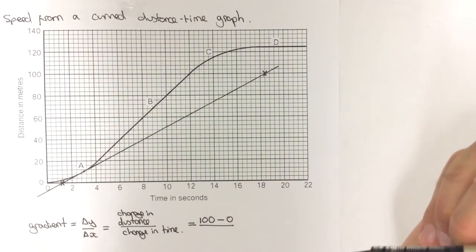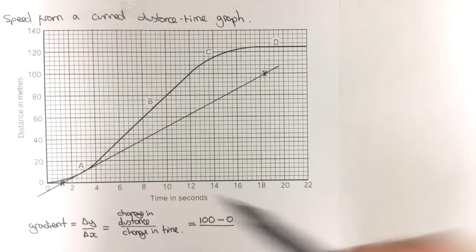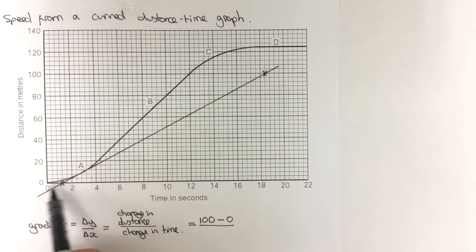And then, if I want to do the change in time, the time scale is a little bit trickier here. So, five little squares represents two, which means each little square would represent 0.4.